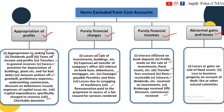Next, Abnormal Gains and Losses. For example: losses or gains on sale of fixed assets, loss to business property on account of theft, fire or other natural calamities. Abnormal gains and losses are not considered in cost accounts. So, Appropriation of Profits, Purely Financial Charges, Purely Financial Incomes, and Abnormal Gains and Losses are all excluded from cost accounts.